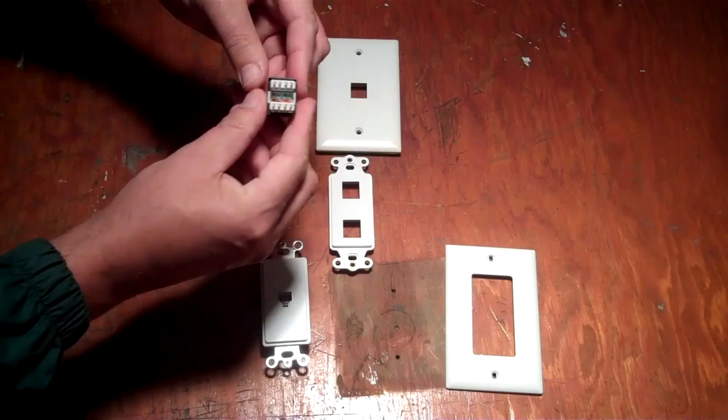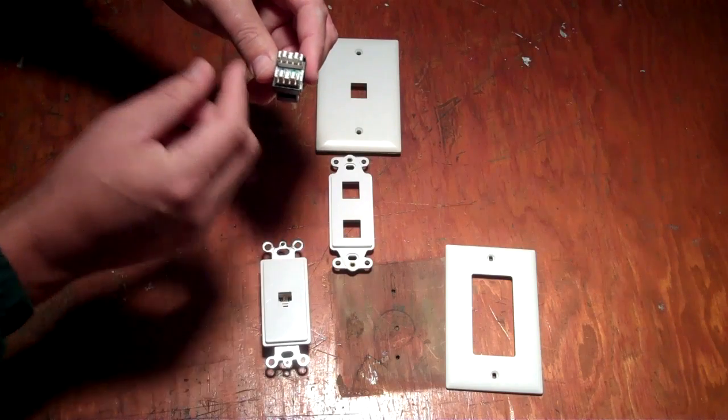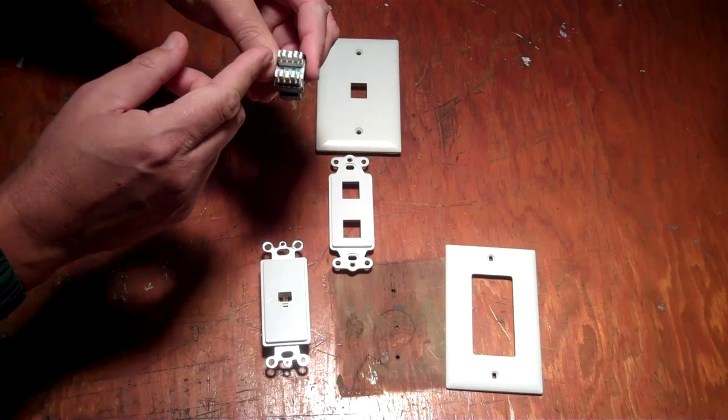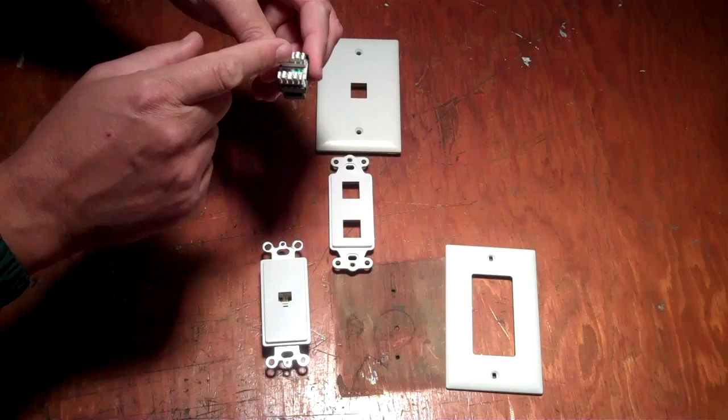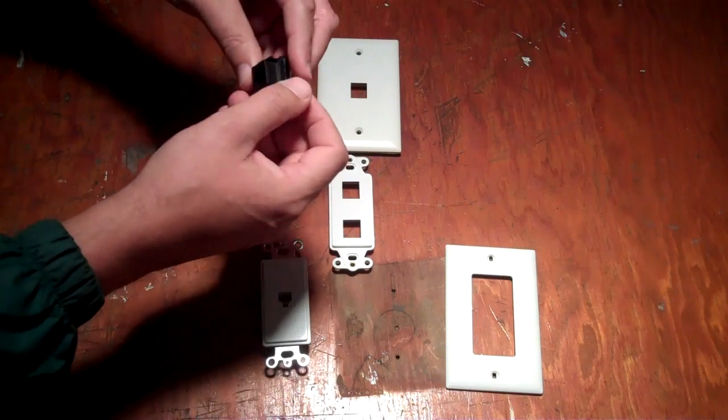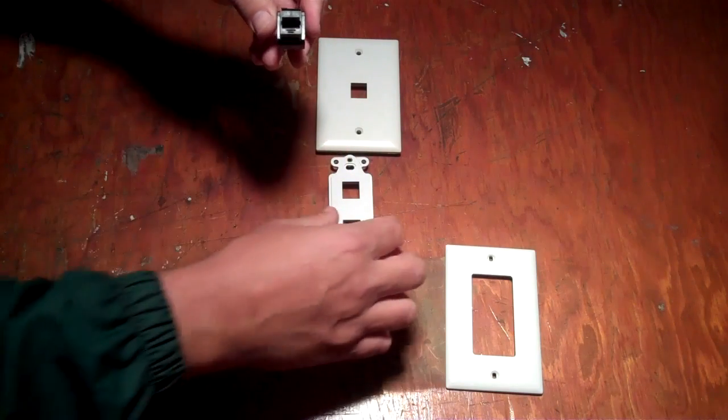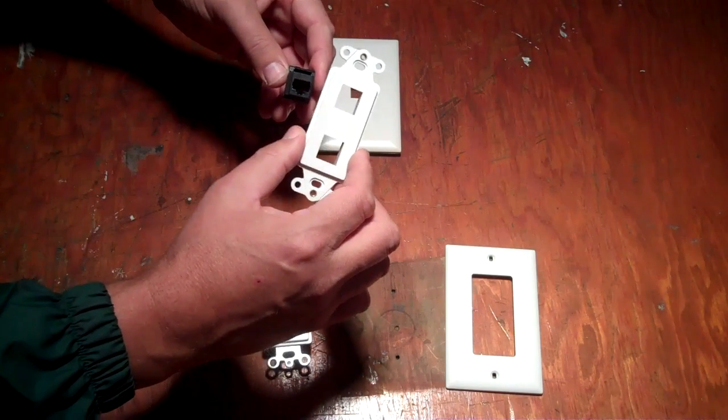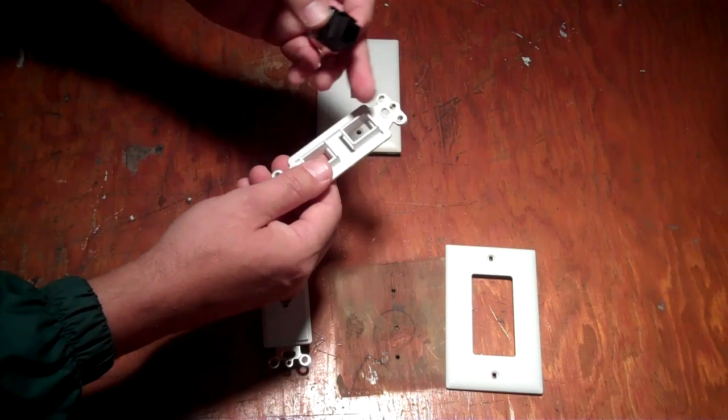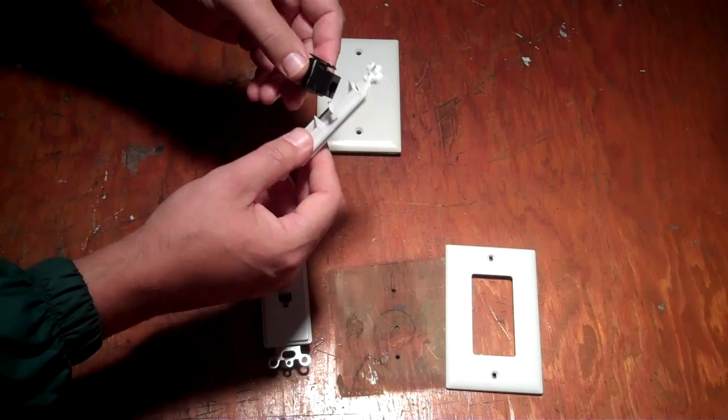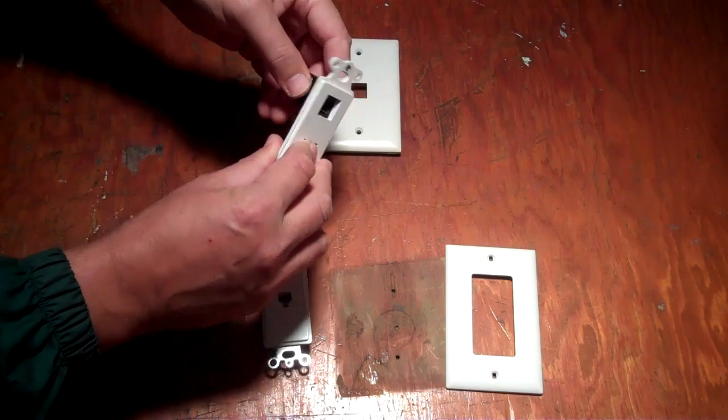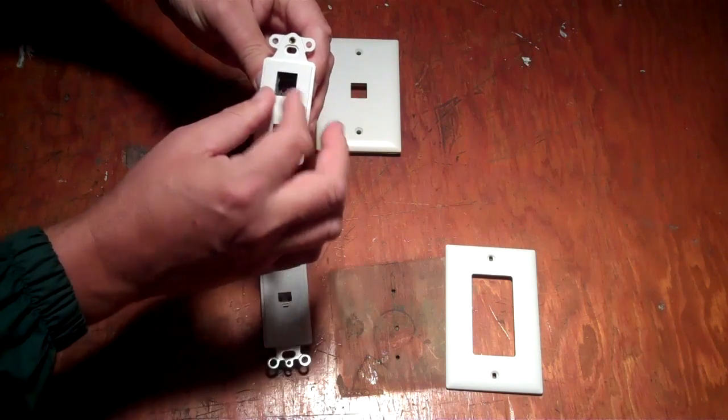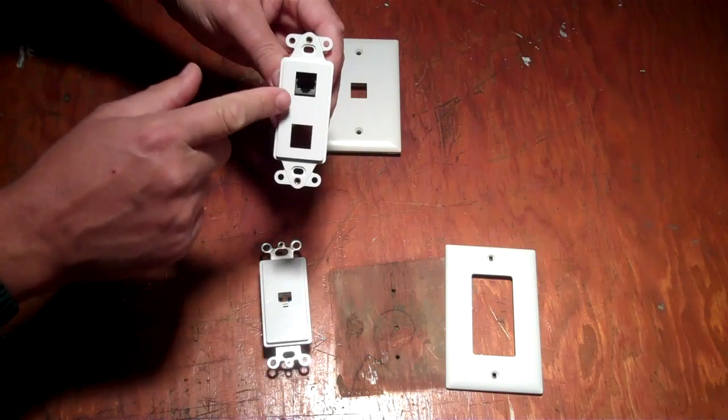So if you flip this jack over, the RJ45, it's color-coded. And you just punch down the blue pair for phone lines. Now to finish this jack out, it's called an insert. And it snaps into something like this. And you simply make sure the arrow is pointed up. And then you put the jack in. And it's flush to the face of this when it's complete.